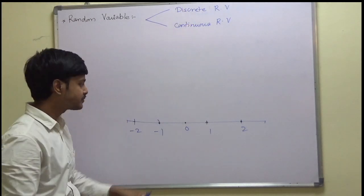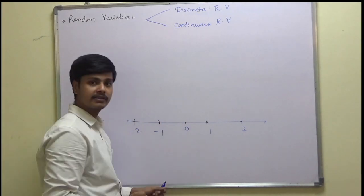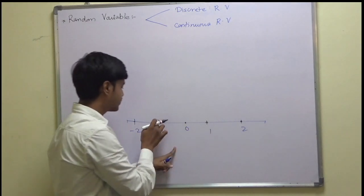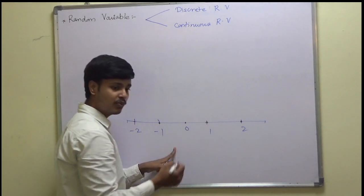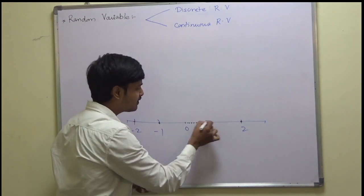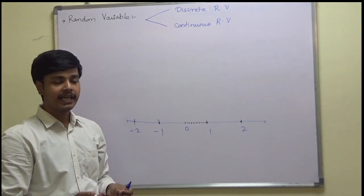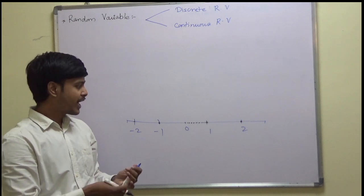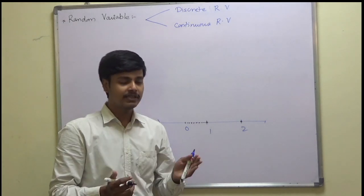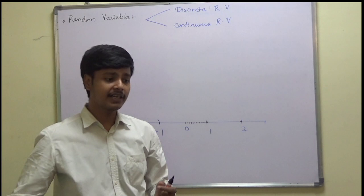Now let us see what is a continuous random variable. Suppose the random variable is attaining values from 0 to 1 — like 0, 0.1, 0.5, and so on — all values in between 0 to 1. If such is the case, then we say that the random variable is a continuous random variable. We will let you know how to identify whether a given problem involves a discrete or continuous random variable when we discuss problems.